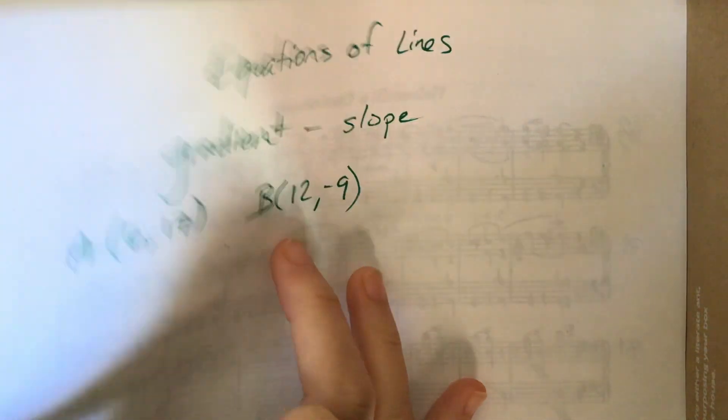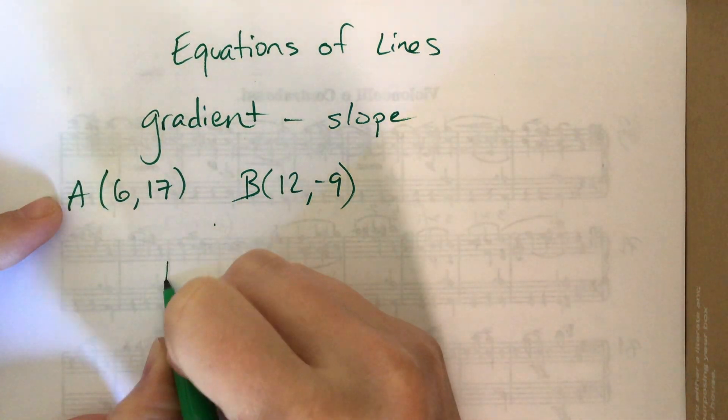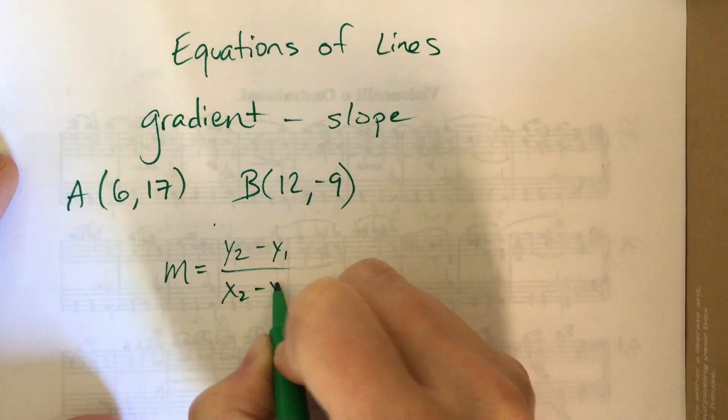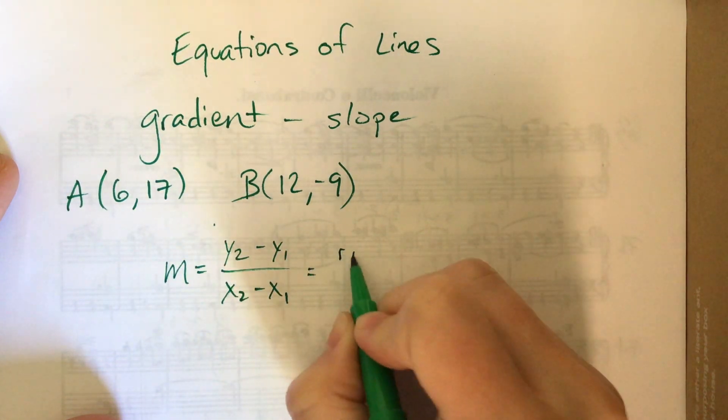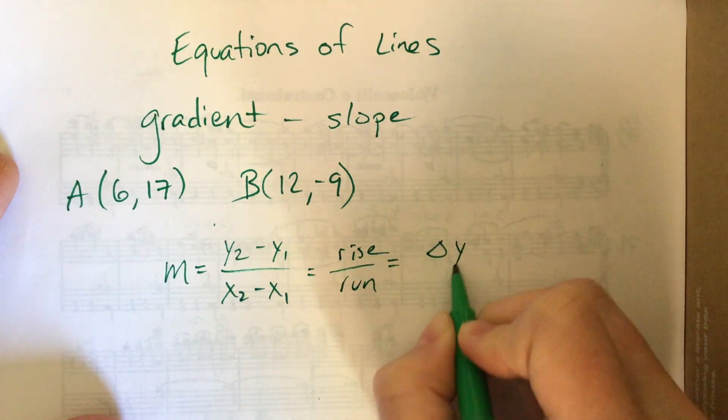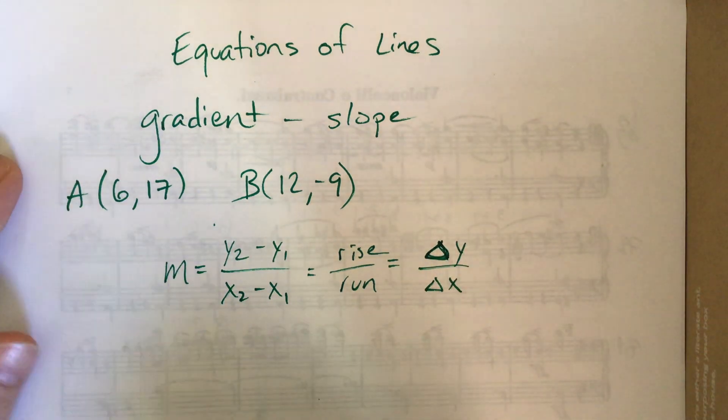I wrote an A, you just couldn't see it, there it is. I want to find the equation of lines. So you know that the gradient formula or the slope formula is y2 minus y1 over x2 minus x1, or you could think of that as rise over run and you could think of that as delta y over delta x. That's a triangle, delta means change.